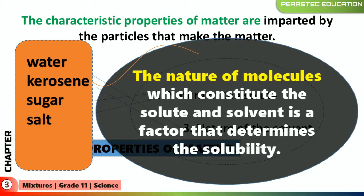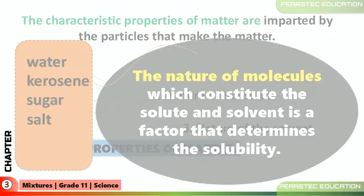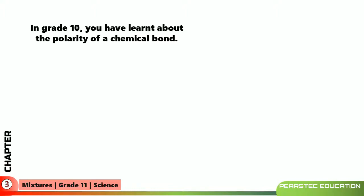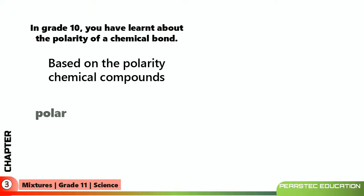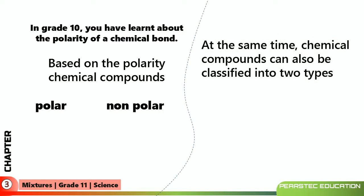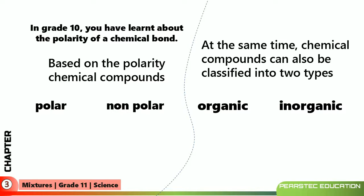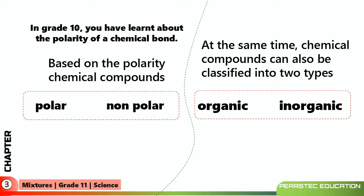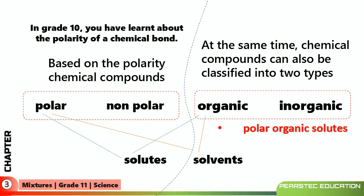What exactly determines solubility is the nature of the molecules constituting the solute — the water molecules, molecules in kerosene, molecules in sugar, and molecules in salt. In grade 10, you learned about the polarity of a chemical bond. Based on polarity, chemical compounds can be defined as polar and non-polar. Chemical compounds can also be classified into organic and inorganic, which we learned in grade 10's first chapter.